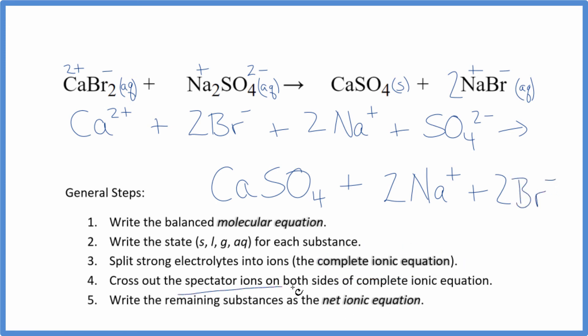Now we can cross out spectator ions. They're on both sides of the complete ionic equation. They haven't changed, so we're really not interested in them. Let's see. Here's 2 bromides on the reactants, and I have 2 bromides in the products. Get rid of those. 2 sodiums in the reactants, and 2 in the products. Get rid of those. What's left, though, that's the net ionic equation for CaBr2 plus Na2SO4.